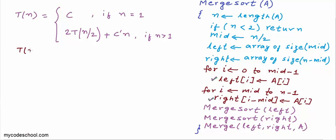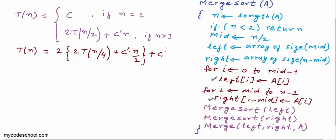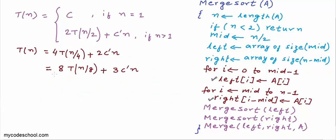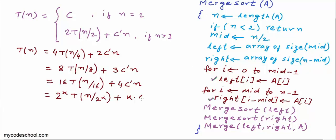T(n) = 2·T(n/2) + c'·n. Expanding T(n/2) = 2·T(n/4) + c'·(n/2), this gives 4·T(n/4) + 2c'·n... wait, 4·T(n/4) + c'·n. Expanding again: T(n/4) = 2·T(n/8) + c'·(n/4), giving 8·T(n/8) + 3c'·n. Continuing: 16·T(n/16) + 4c'·n. In general, this pattern gives 2^k · T(n/2^k) + k·c'·n.